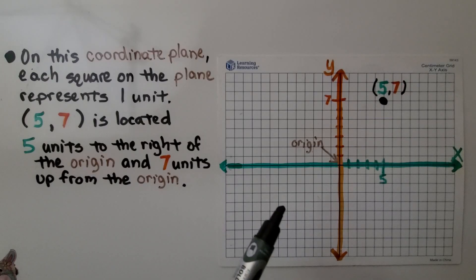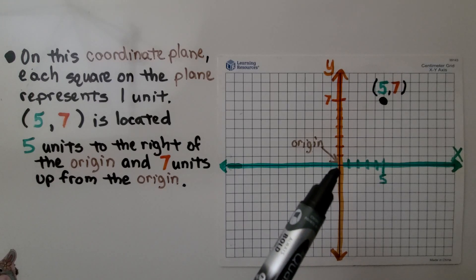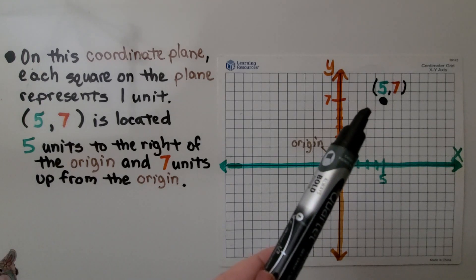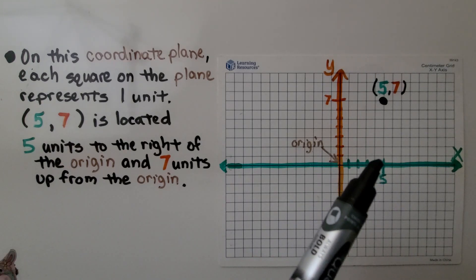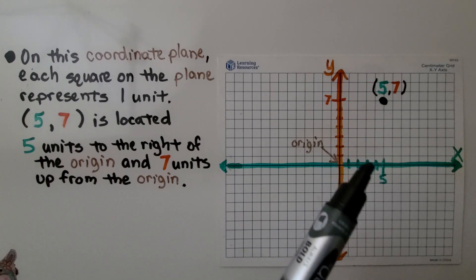On this coordinate plane, each square on the plane represents one unit. We have the ordered pair five, seven. And it's located five units to the right of the origin, one, two, three, four, five,